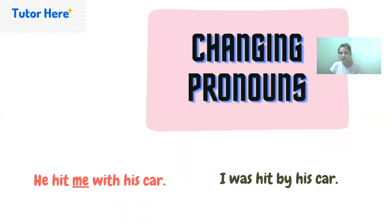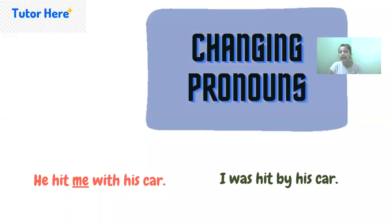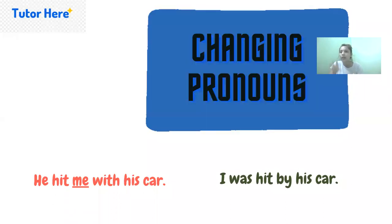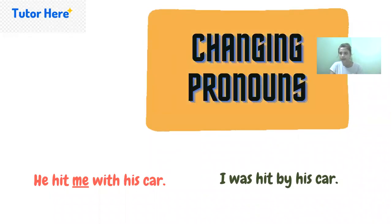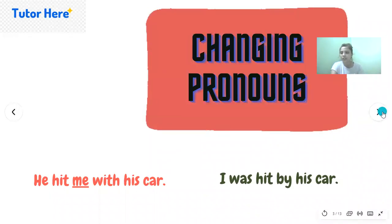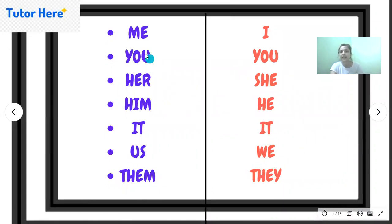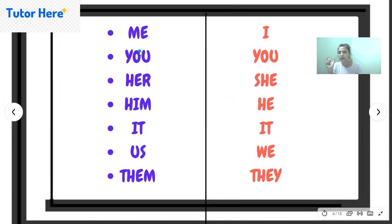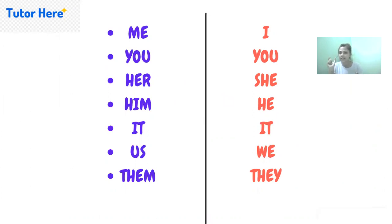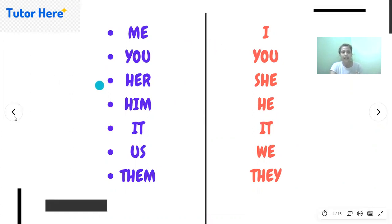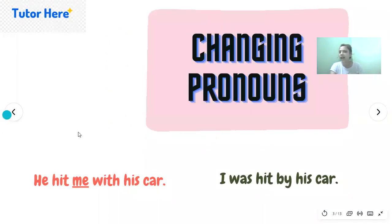Now let's start with changing the pronouns. While you are changing active voice to passive voice, you have to keep in mind that you also have to change the particular pronoun present in the active voice. For that, we have a table. If in active voice we have 'me' in the sentence, we are going to change it to 'I' in the passive voice.